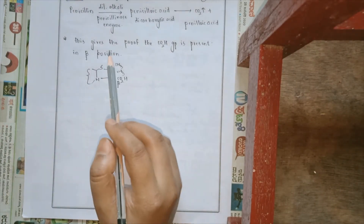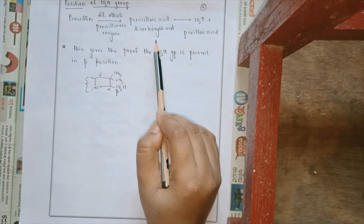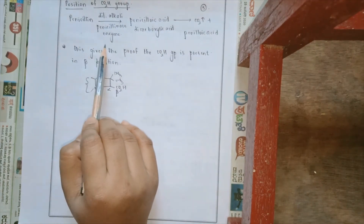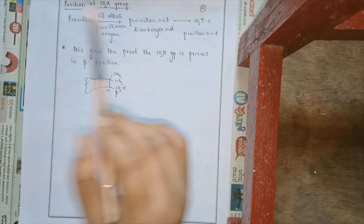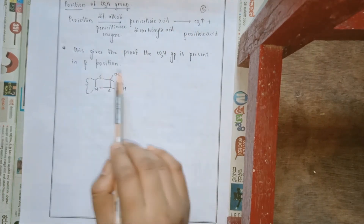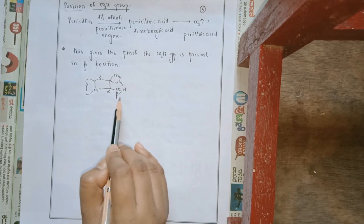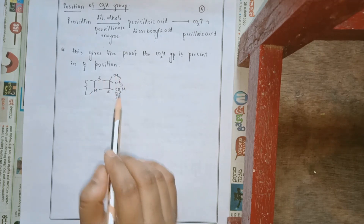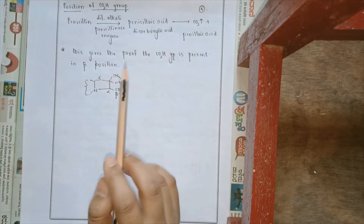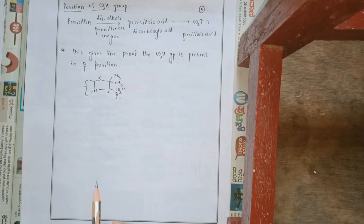There is a presence of carbon dioxide and penicillin amine, and the position of the carboxylic group has to be established. Penicillin when reacted with dilute alkali gives penicilic acid — a dicarboxylic acid — carbon dioxide, and peniloic acid. The same products result when penicillin is acted upon by penicillinase enzyme. This gives proof that the carboxylic group is present in the beta position — alpha and beta with respect to sulfur. This gives the structural elucidation of penicillin amine, peniloaldehyde, and the carboxylic group present in penicillin.